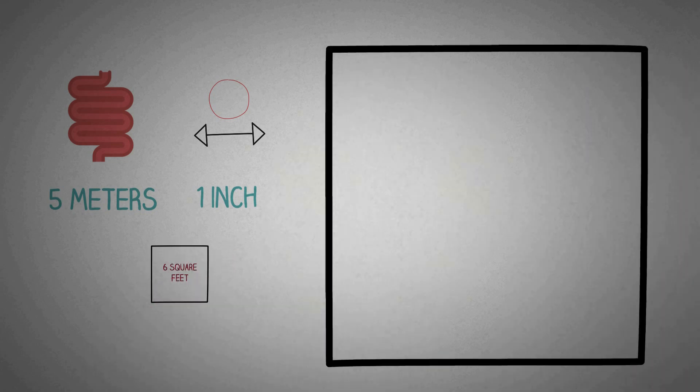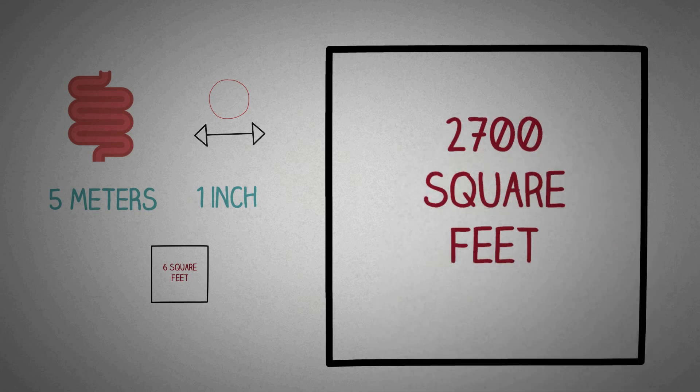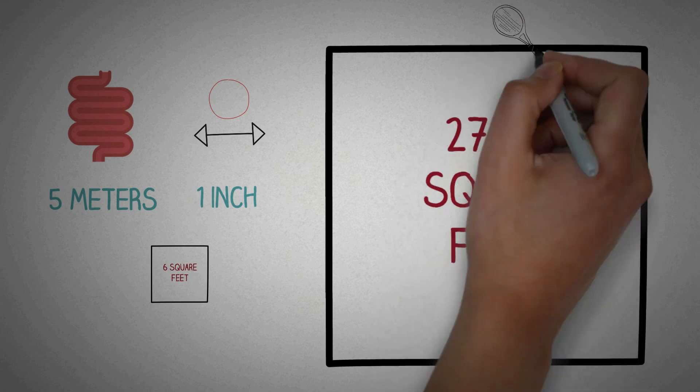The small intestine is about 5 meters long and about 1 inch in diameter. Based on these measurements, you would expect the surface area of the small intestine to be about 6 square feet. But it's actually around 2700 square feet or about the size of a tennis court.